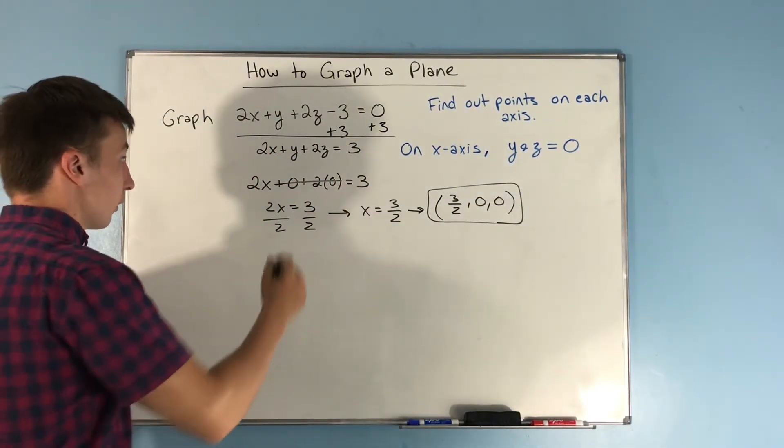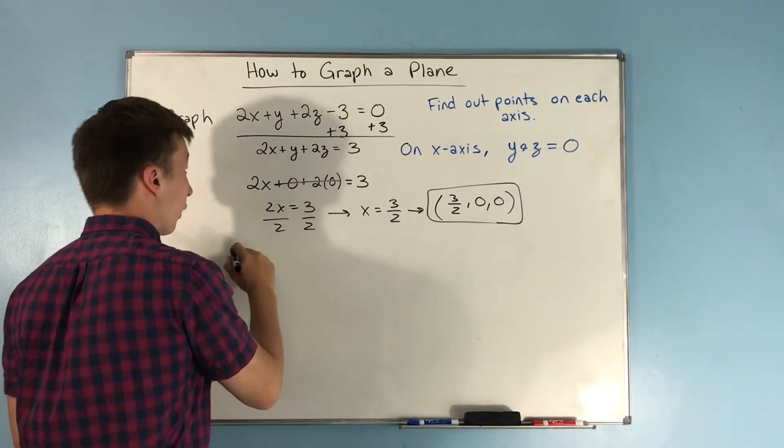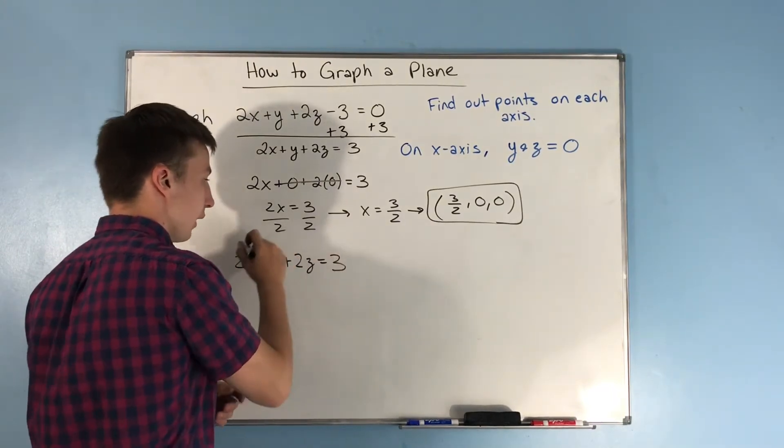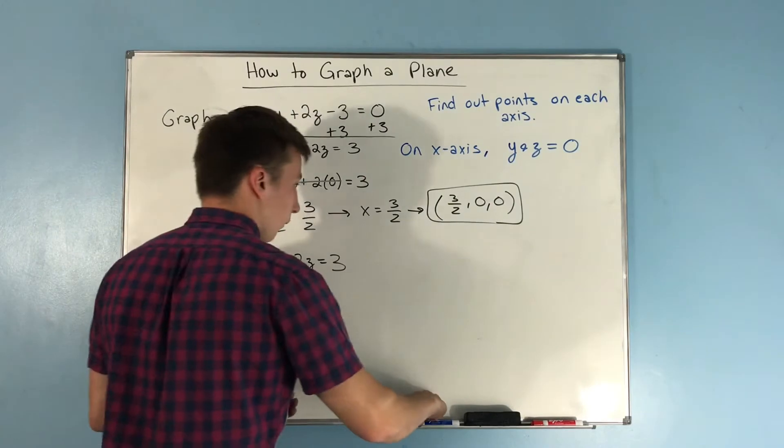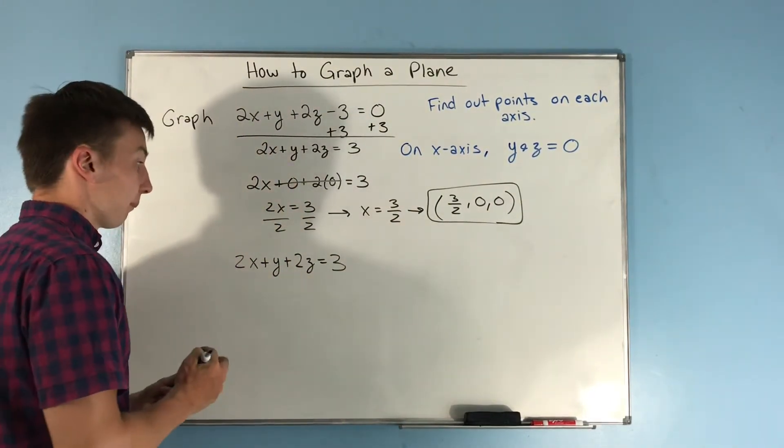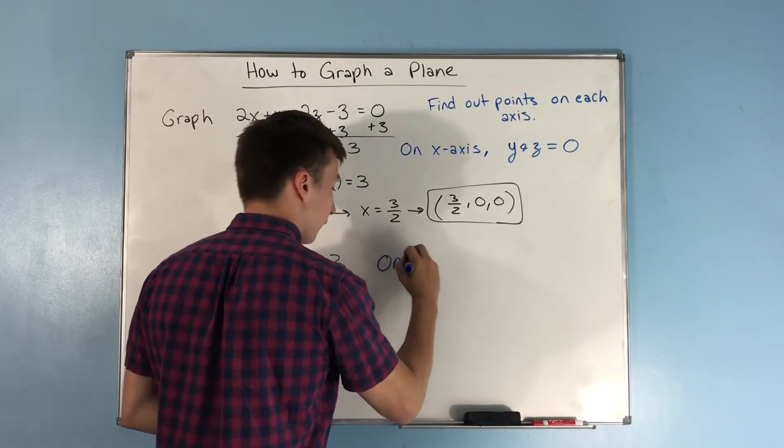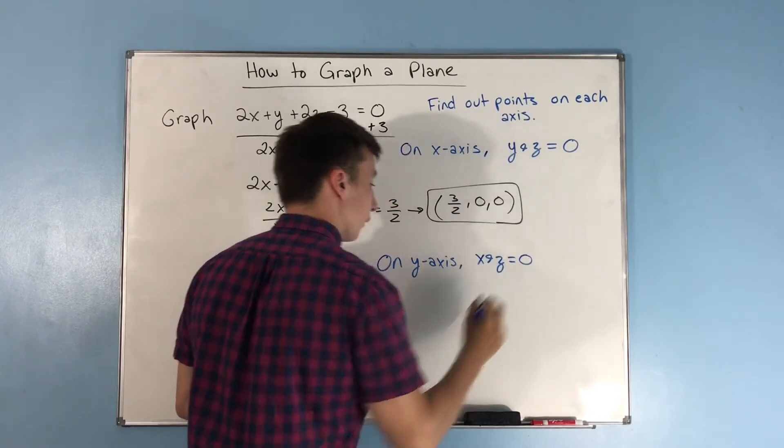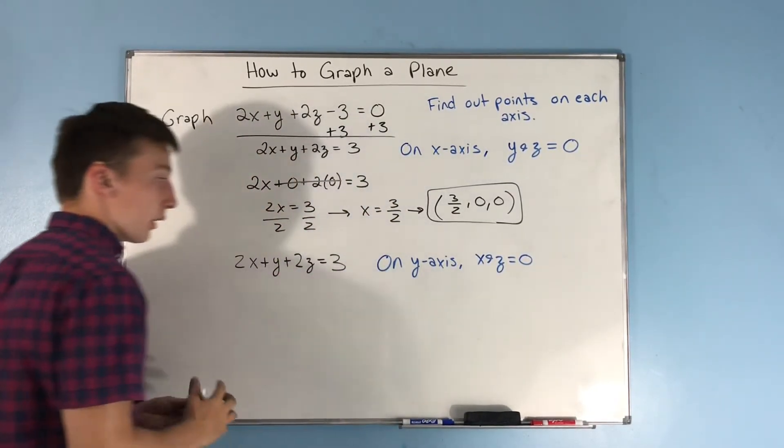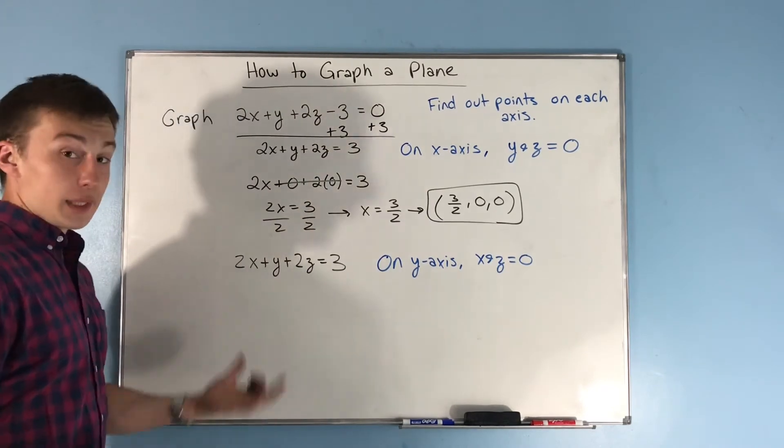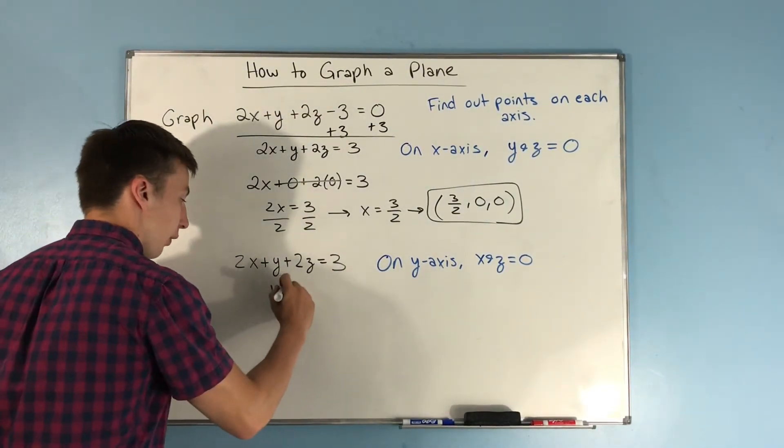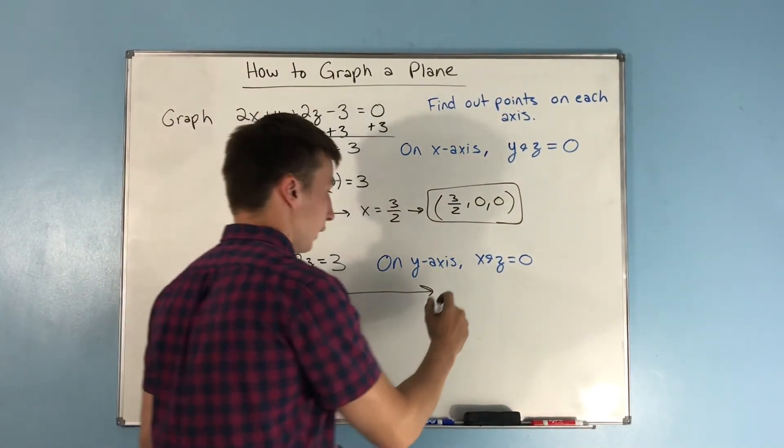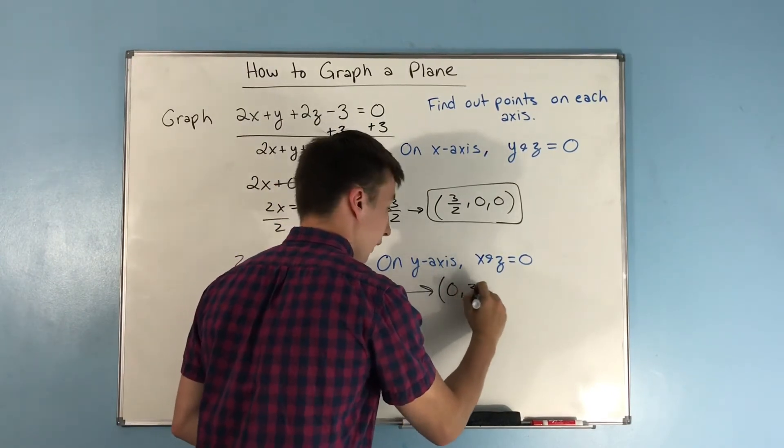Next, we have our equation again, 2x plus y plus 2z equals 3. Let's find another point, because we need three points to construct a plane. On the y-axis, x and z are 0. So let's set x and z equal to 0, and you see that y will equal 3. That gives you the point (0, 3, 0).